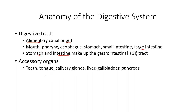Then we have some accessory organs that aren't technically part of this, but they do help — like the teeth for mechanical breakdown, and the tongue also helps with mechanical breakdown. The salivary glands, liver, gallbladder, and pancreas all help in chemical breakdown. The liver secretes bile, which is stored in the gallbladder, and the pancreas secretes many different digestive enzymes.